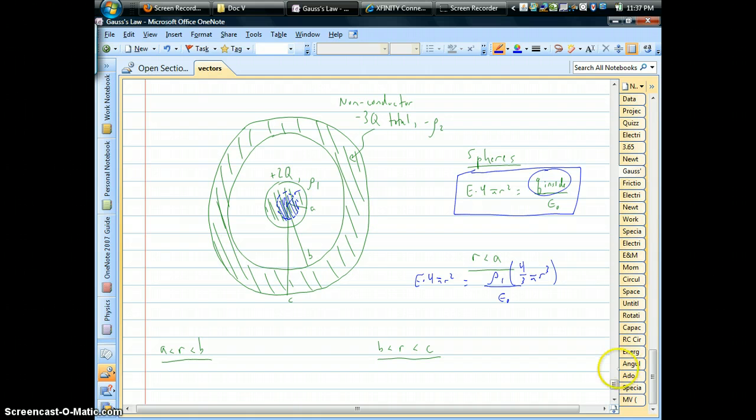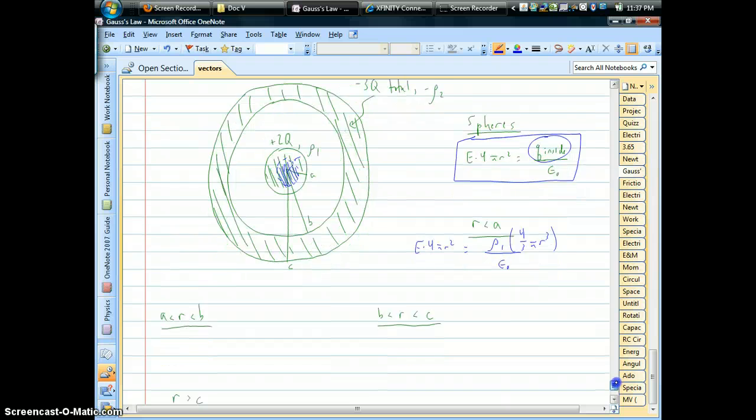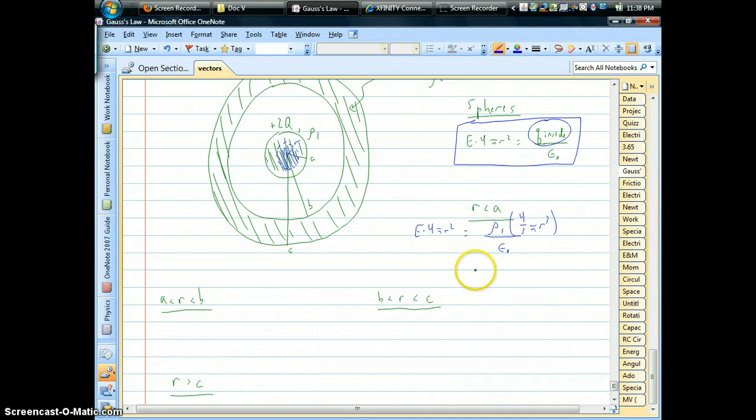So that product right there, by definition, density times volume is going to give you charge. That's all we're doing. And so we can actually find out what our electric field is inside there.